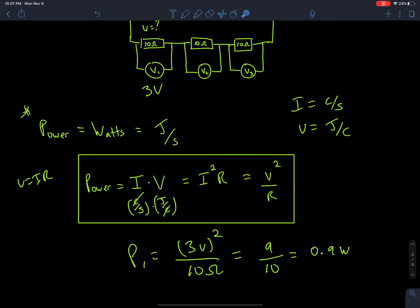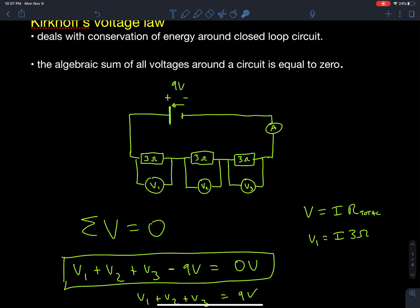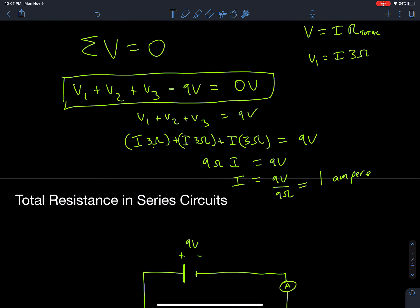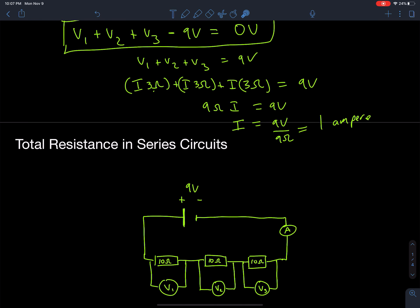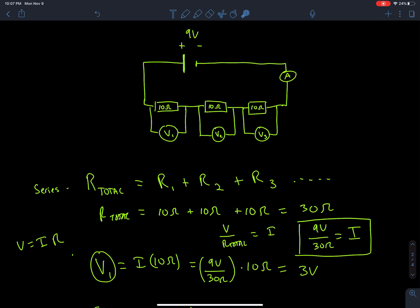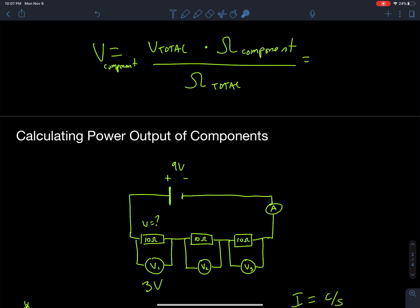We'll be doing more of these calculations in the workbook. This video covered how to process series circuits: starting with Kirchhoff's law to determine resistance, current, and voltage across each component — giving us R_total = R1 + R2 + R3 — then calculating potential differences across components, and finally calculating power.